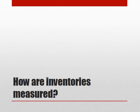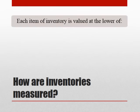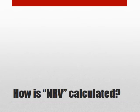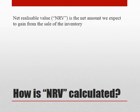Our next question is how do we value inventories? As per IAS 2, every item of inventory is going to be valued at the lower of either net realizable value, or NRV, or cost. So first of all we've got to define what we mean by these two terms. Net realizable value is the amount that we would expect to gain from actually selling the piece of inventory that we're looking at.